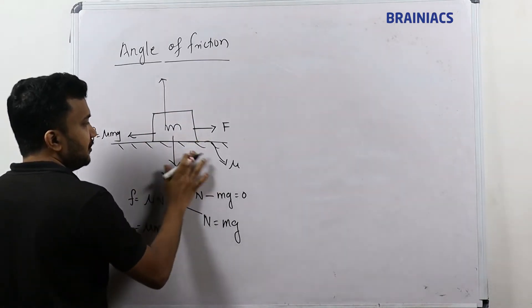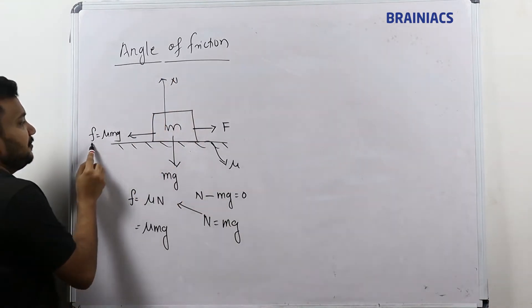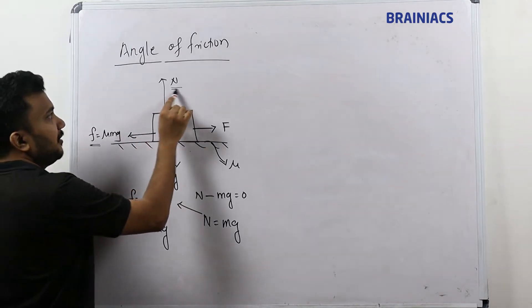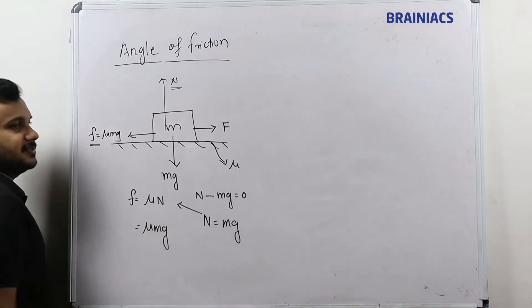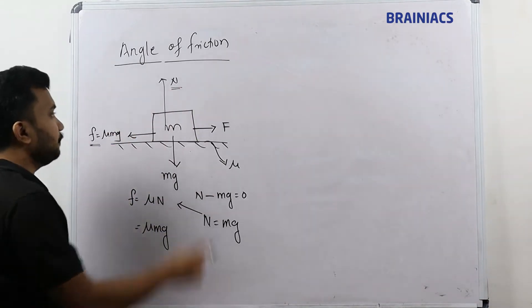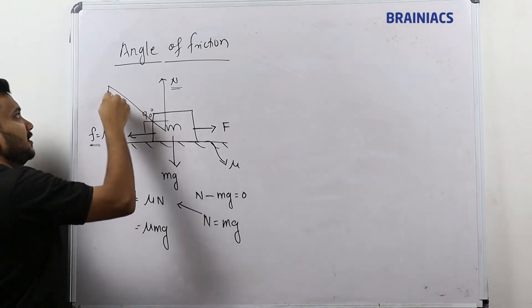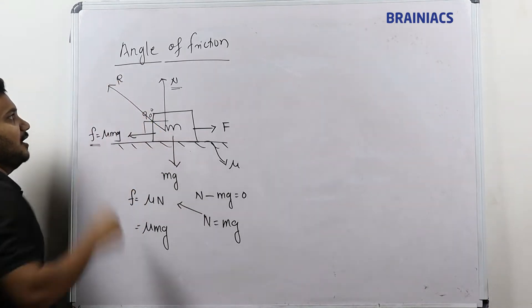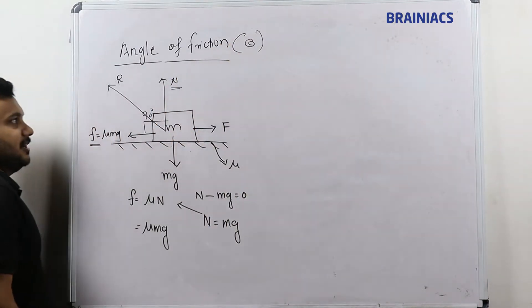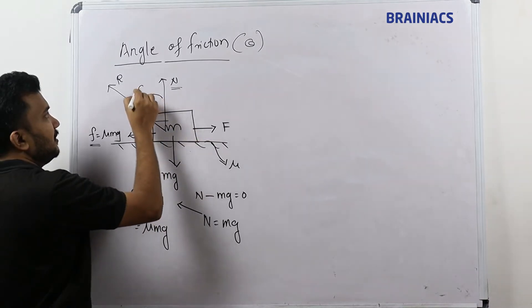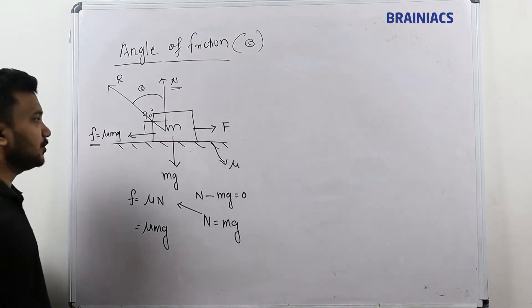Now, frictional force F and normal reaction N are both vector quantities acting at 90 degrees to each other. Their resultant is a vector R. The angle between this resultant R and the normal reaction is called the Angle of Friction, represented as theta.